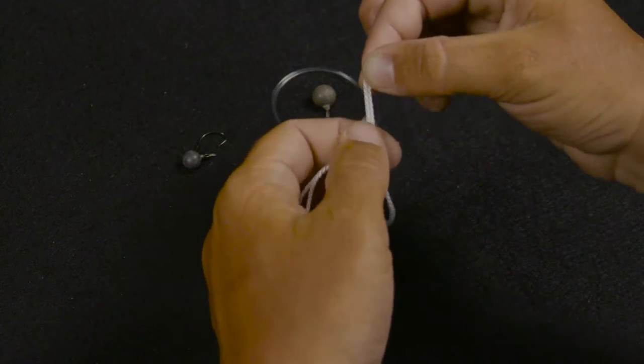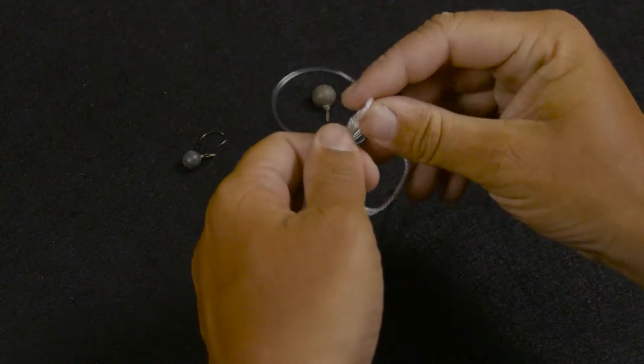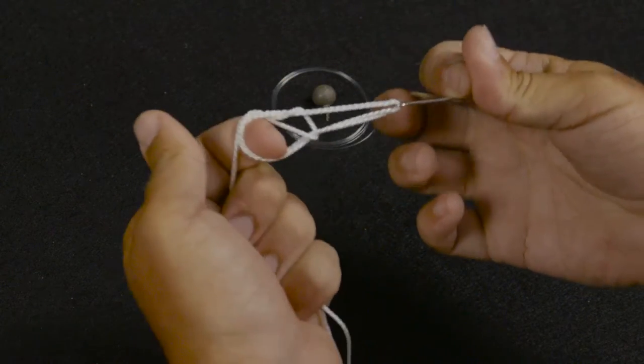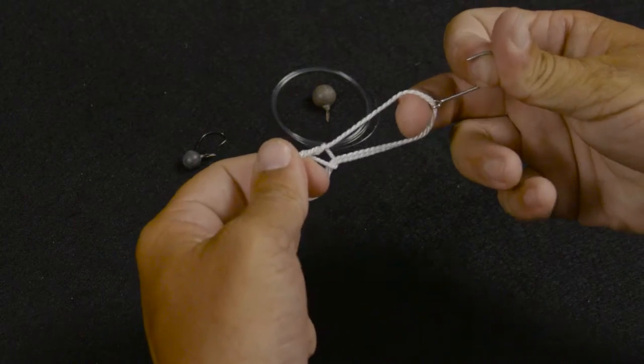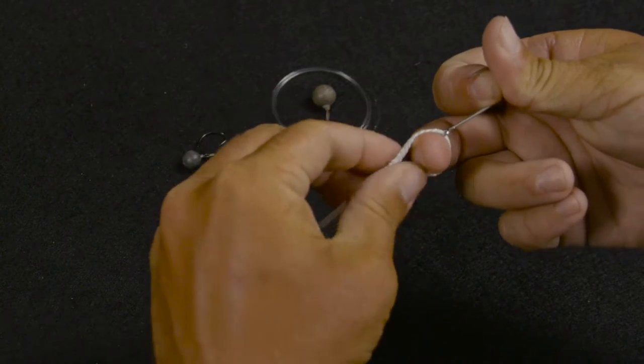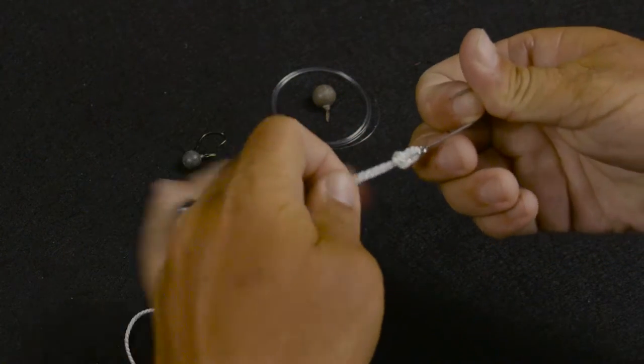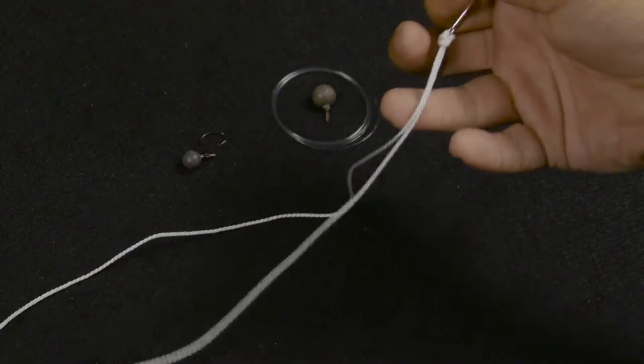Open it up, pull the hook through, cinch it up, cinch it down onto your finger and then pull it tight. Right there I tied my Palomar knot.